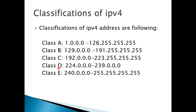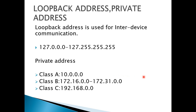Class D IP address range is 224.0.0.0 to 239.0.0.0 and is used for research purposes. Class E IP address range is 240.0.0.0 to 255.255.255.255 and is used by the military and some other special purposes. There are also two more concepts: loopback address and private addresses.